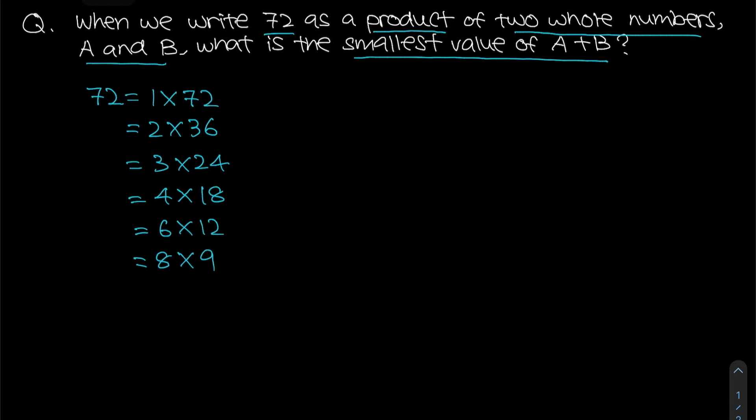Which means that you will notice that now they will be the product of 2 whole numbers. It's either 1 and 72, or 2 and 36, or 3 and 24, or 4 and 18, or 6 and 12, or lastly 8 and 9.